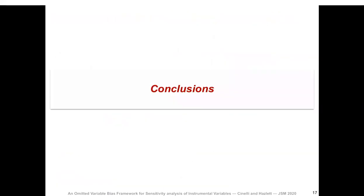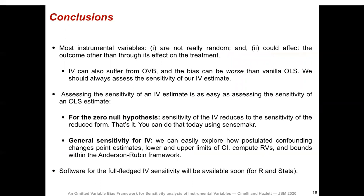To wrap up: just like proximity to college, most instrumental variables are not really random and could affect the outcome other than through their effect on the treatment. The bottom line is that instrumental variables can also suffer from omitted variable bias, so we should always assess the sensitivity of our IV estimates. On the bright side, assessing the sensitivity of an IV estimate is as easy as assessing the sensitivity of an OLS estimate. For the zero null hypothesis, the sensitivity of the IV reduces to the sensitivity of the reduced form. For the general case, we can perform sensitivity of the IV within the Anderson-Rubin framework. Everything shown here is easy to compute, and software for the full-fledged IV sensitivity will be available soon for both R and Stata.